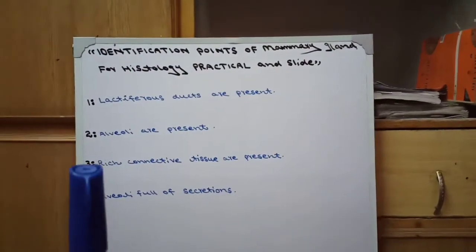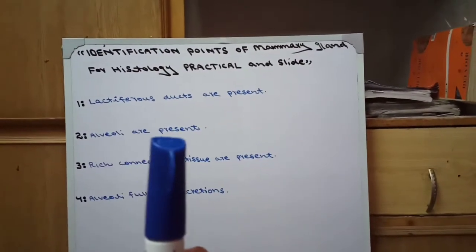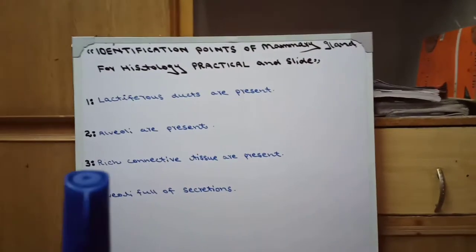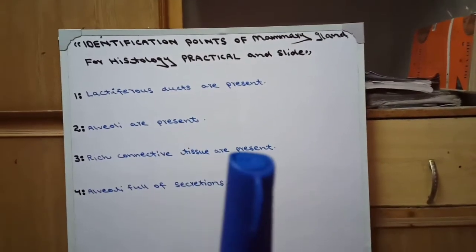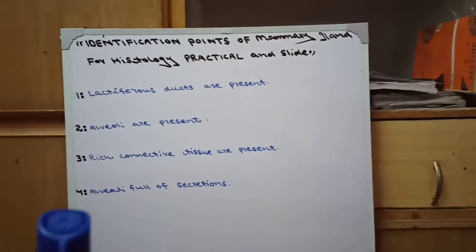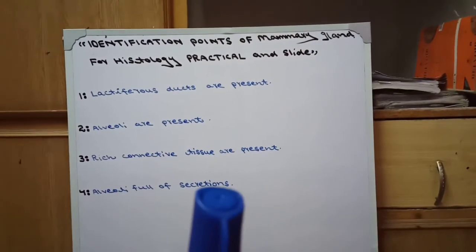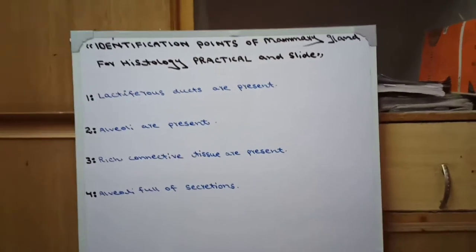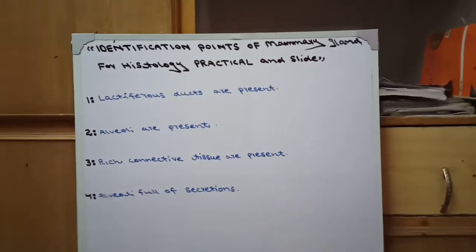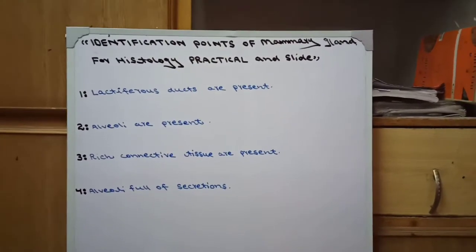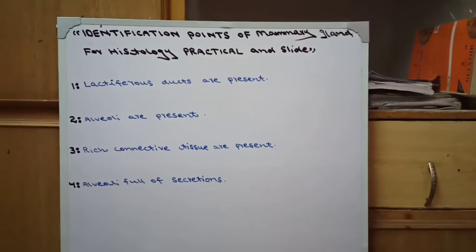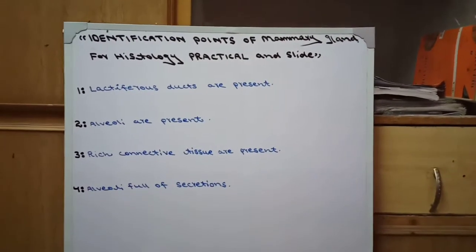Number three: rich connective tissue are present. And number four: alveoli full of secretions, meaning full of milk. These are the four identification points of mammary gland for histology practical and slide.